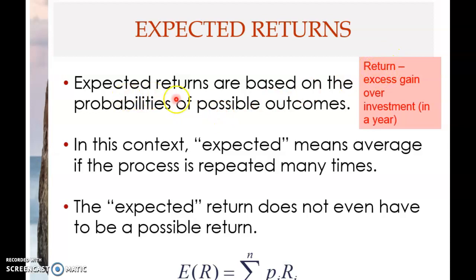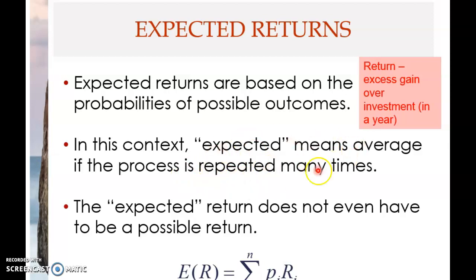So what do we mean by expected return? The expected return is based on a few key concepts: probabilities, possible outcomes, and the concept of 'expected' itself. In this context, 'expected' means average — the average you'd get if the process is repeated many times. So if you invest in a project and can repeat the investment many times, the expected return is the average return you'd get over all those repetitions.